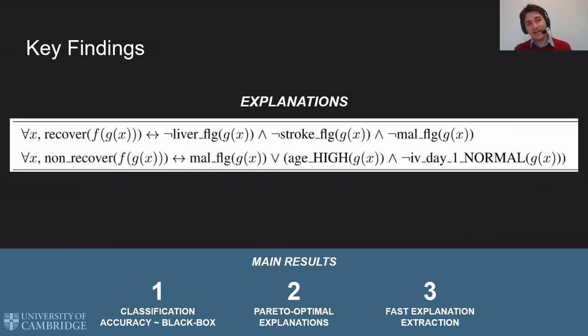Also, ELEN's explanations are easy to interpret for anyone. Here's an example of two global explanations found by ELENs on the clinical dataset. A patient will recover if and only if the patient did not have a liver disease, a stroke, or a malignant cancer. It's easy to check that this explanation makes sense even for non-clinicians.